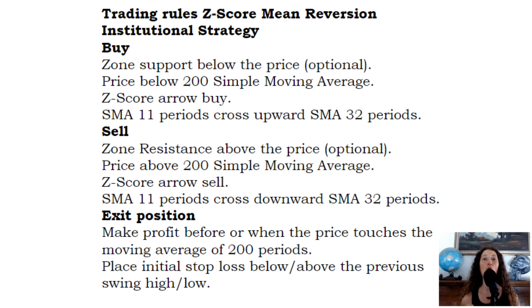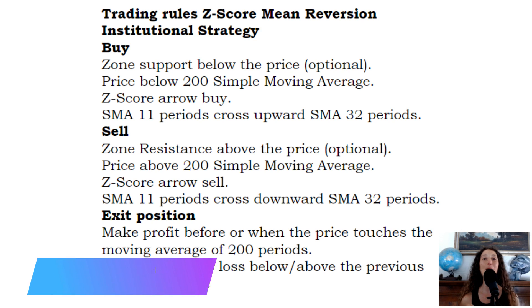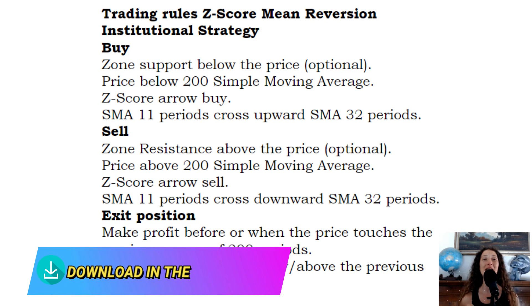Make profit before or when the price touches the moving average of 200 periods. Place initial stop loss below or above the previous three highs or lows. Examples of trades.